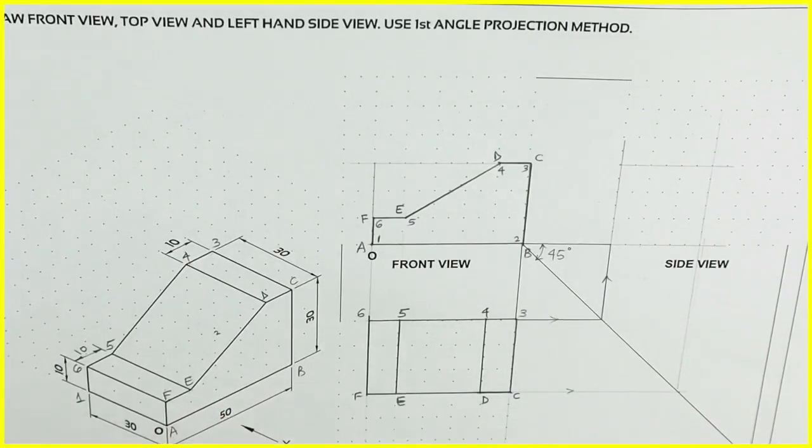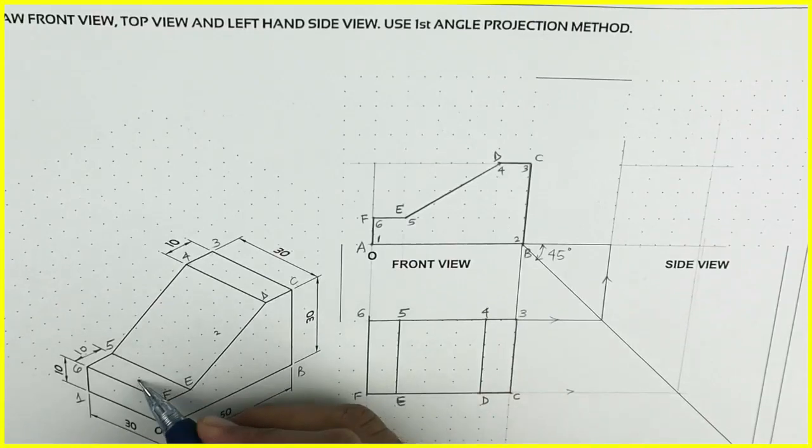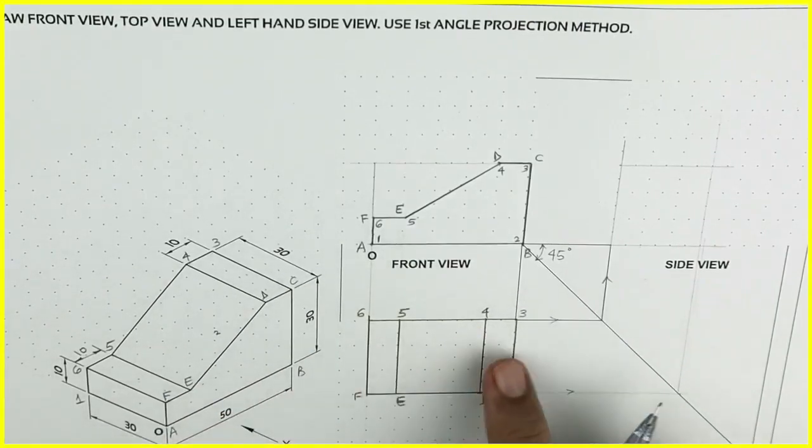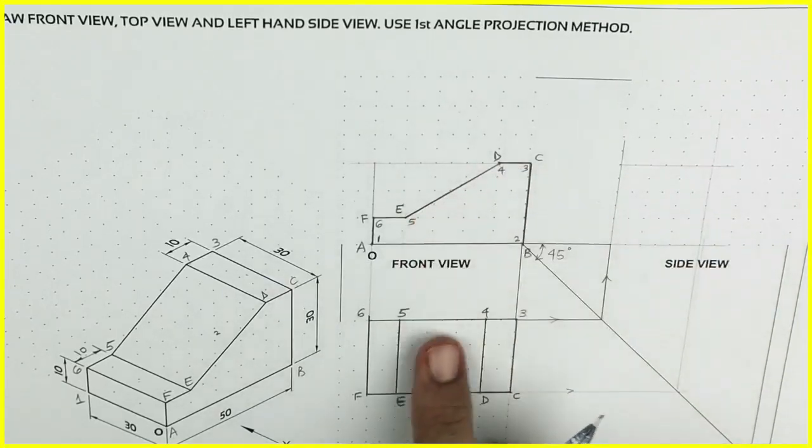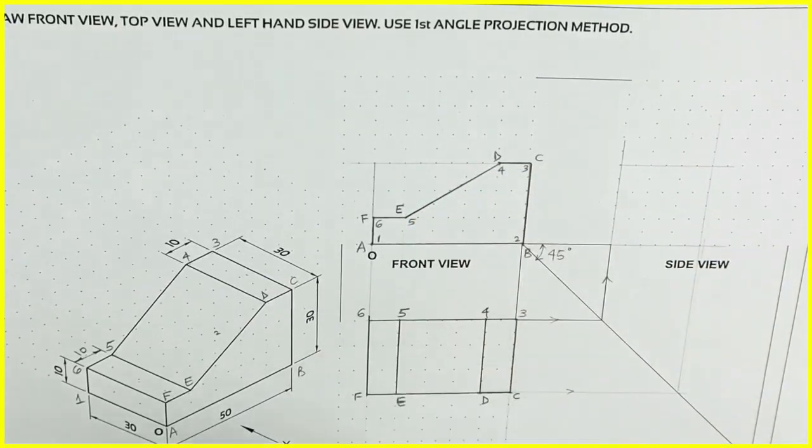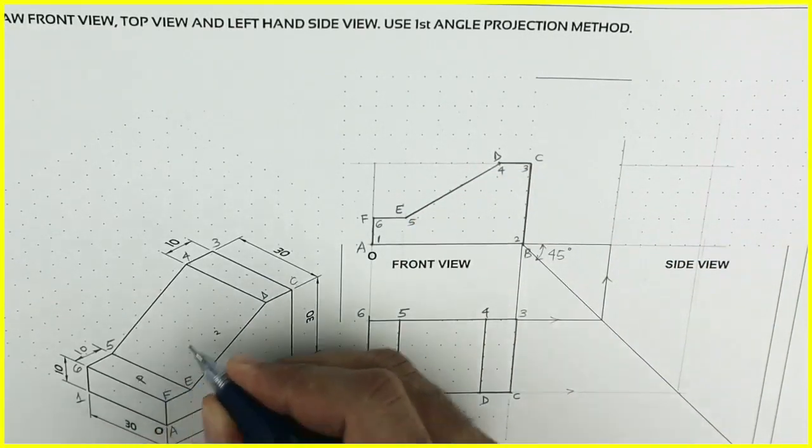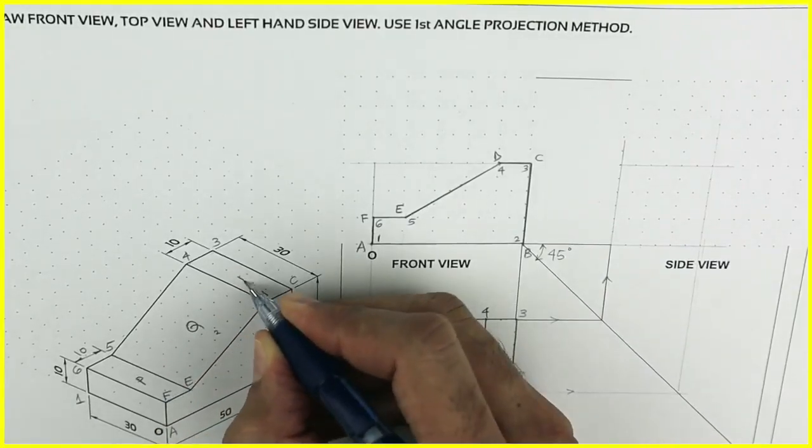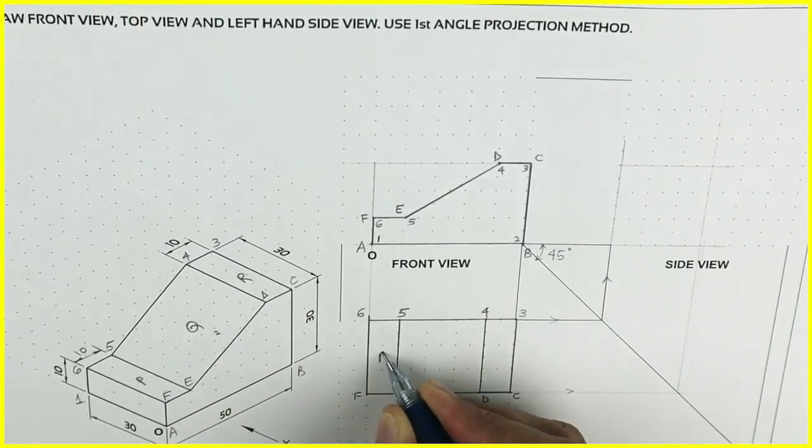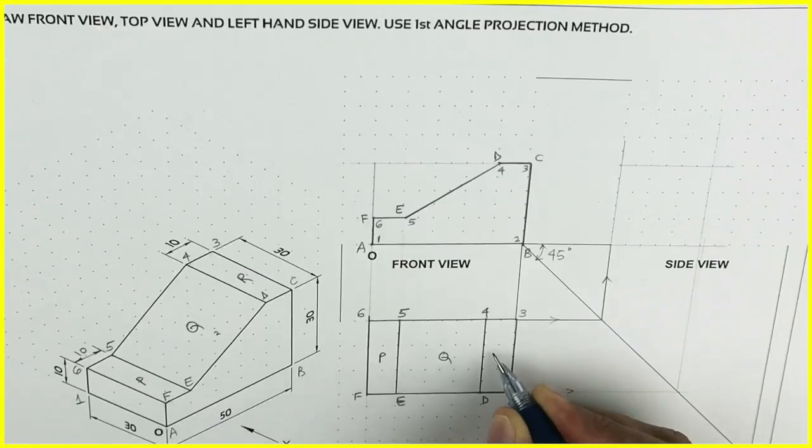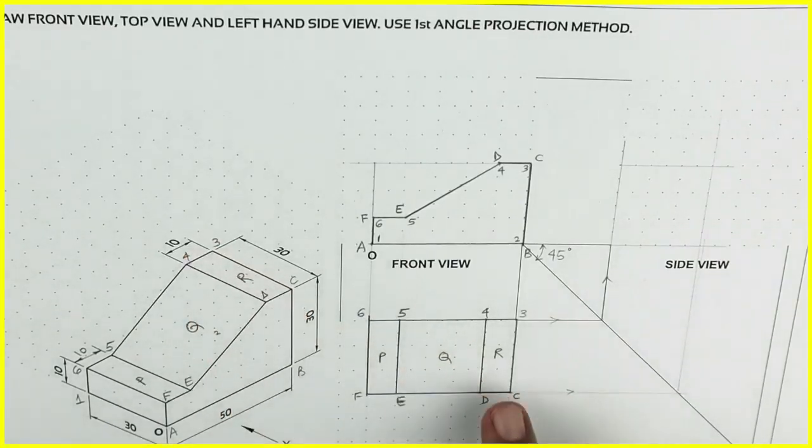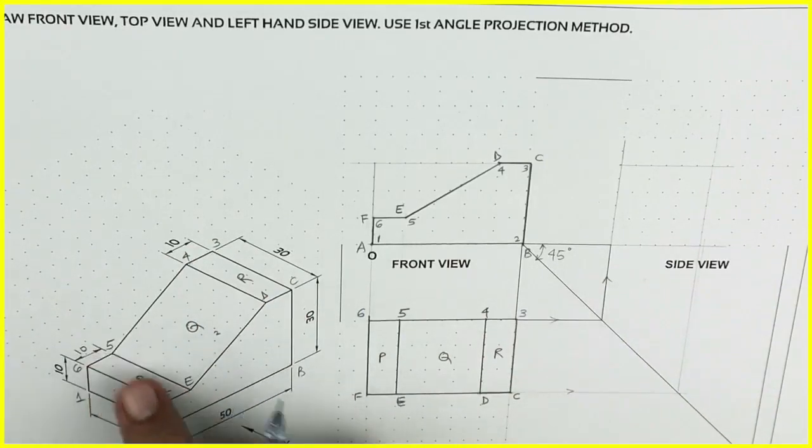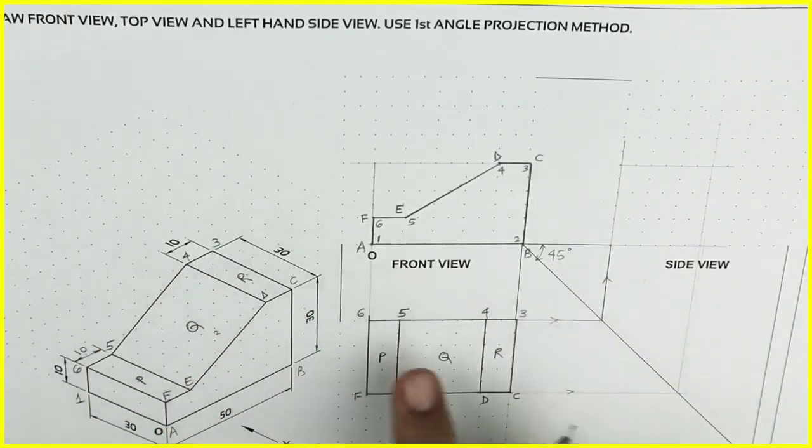So when you see from the top, you will see 3 rectangle. 1, 2, 3. This slope will appear as a rectangle. See that. Let's say this is P, Q, and R. So this is P, this is Q, and this is R. R, P, and Q.